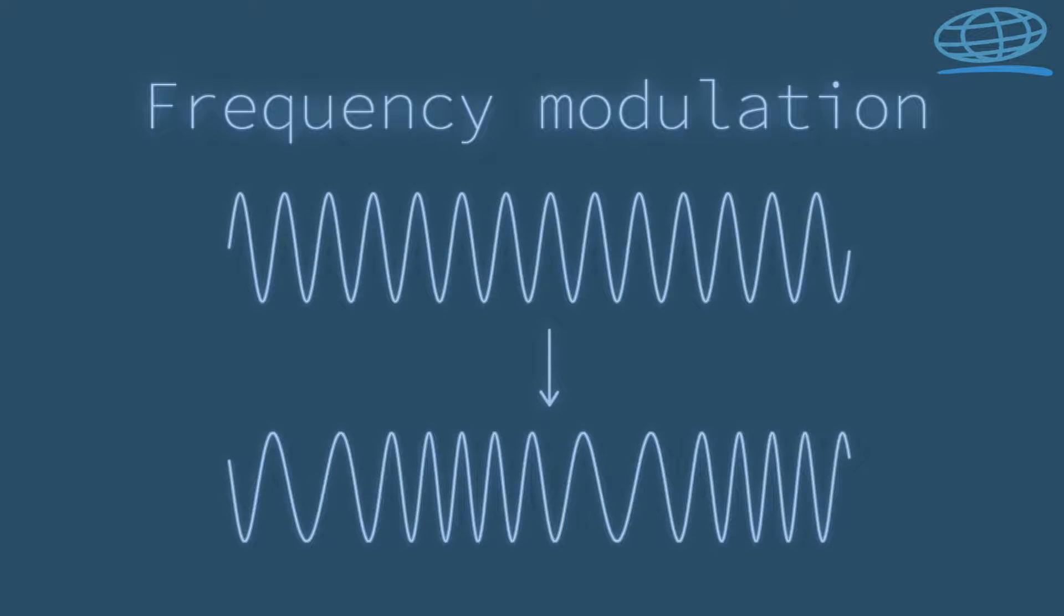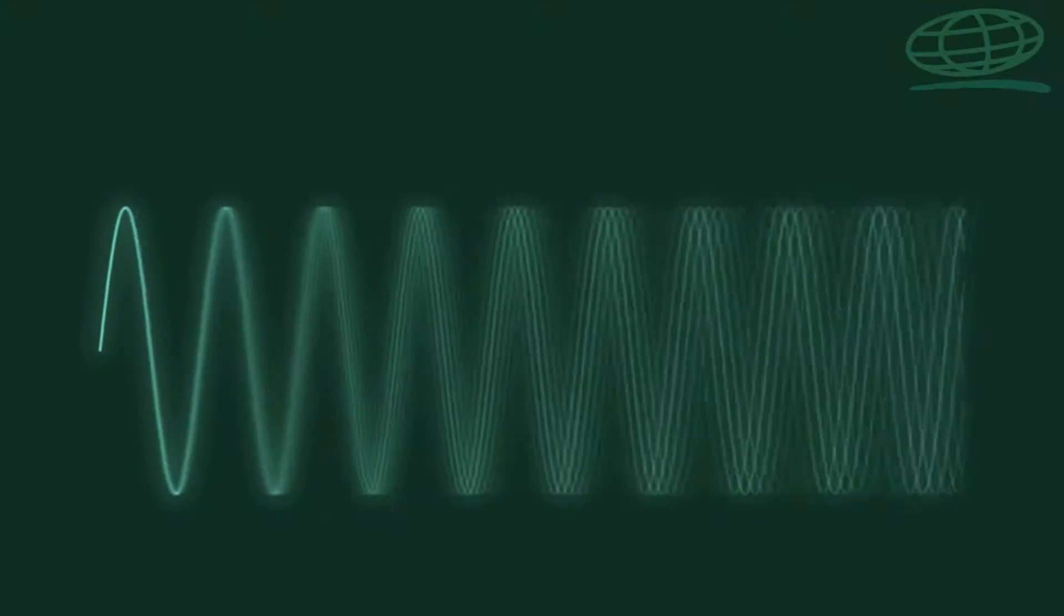Another way to create new timbre is to take a single sine wave and modulate its frequency. If we do it slowly, we get just gliding pitch. But we can do it faster.